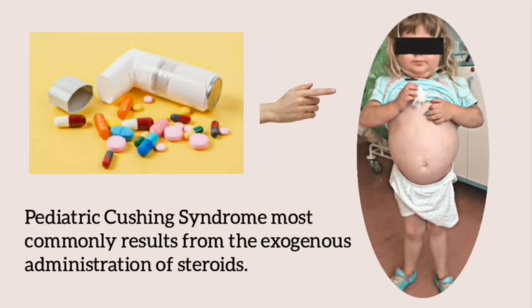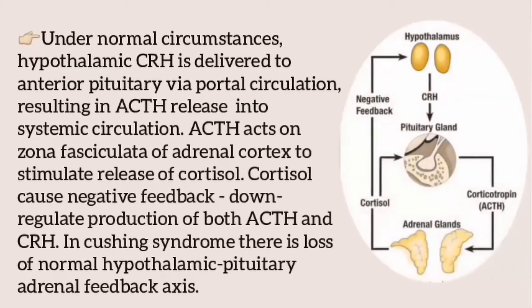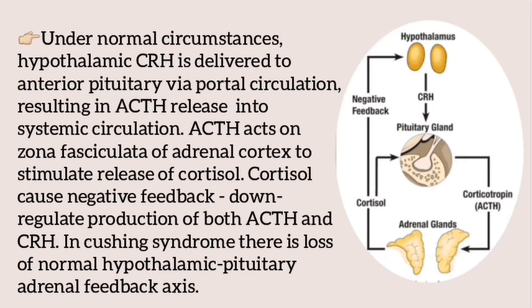Pediatric Cushing syndrome most commonly results from exogenous administration of steroids. Under normal circumstances, hypothalamic corticotropin-releasing hormone (CRH) is delivered to the anterior pituitary via portal circulation, resulting in the release of ACTH from the anterior pituitary into systemic circulation. ACTH acts on the zona fasciculata of the adrenal cortex to stimulate cortisol release, and cortisol causes negative feedback, down-regulating the production of ACTH and CRH. In Cushing syndrome, there is loss of this normal hypothalamic-pituitary-adrenal feedback.